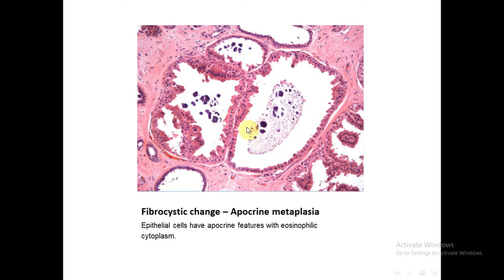This is apocrine metaplasia, in which the presence of apocrine cells is associated with benignity and is an indicator of benignity. These apocrine cells line a cystically dilated duct. These cells are large cells with eosinophilic cytoplasm and prominent hyperchromatic nucleus. These are apocrine cells.